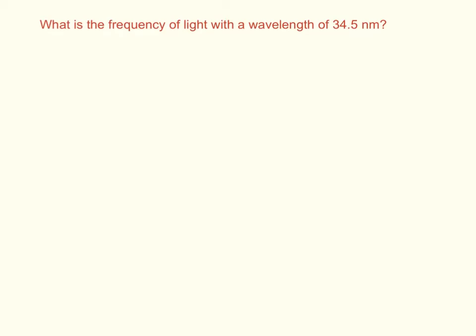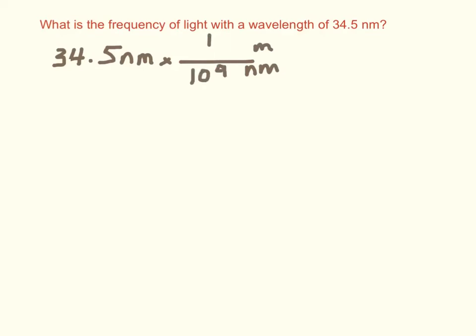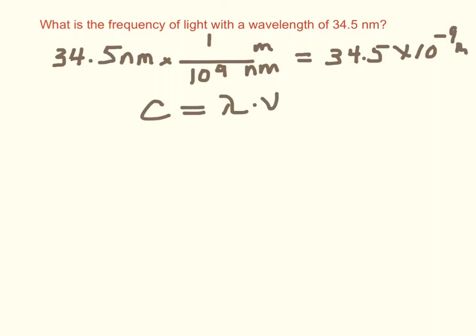Let's try a problem comparing frequency and wavelength. What's the frequency of light with a wavelength of 34.5 nanometers? First, we want to convert that. Remember, nano means 10 to the 9th, so we have 10 to the 9th nanometers in a meter — so 34.5 times 10 to the minus 9 meters. Our formula is c equals lambda times frequency, so 3 times 10 to the 8th equals 34.5 times 10 to the minus 9 times the frequency.